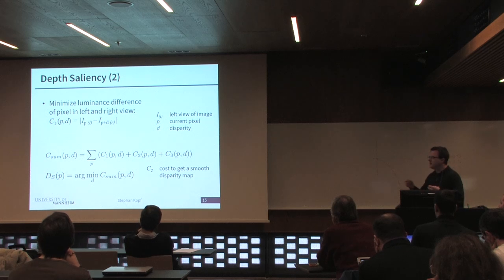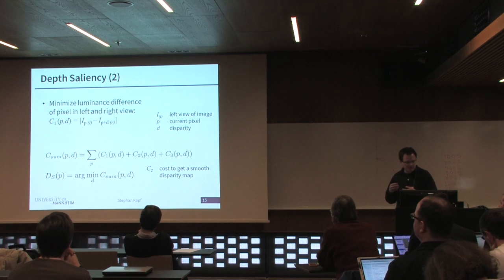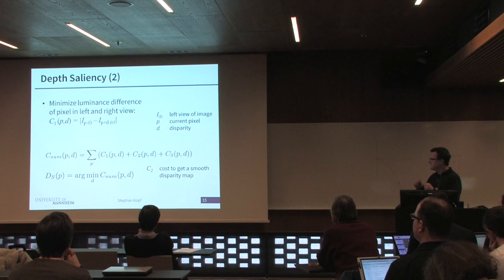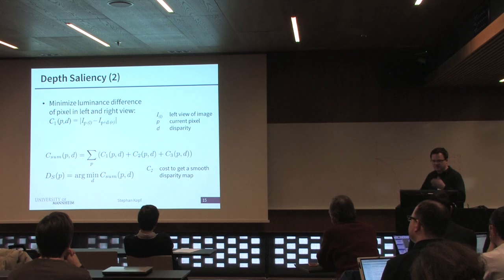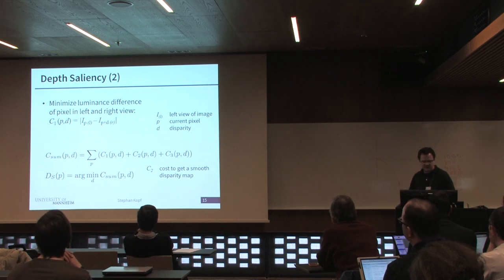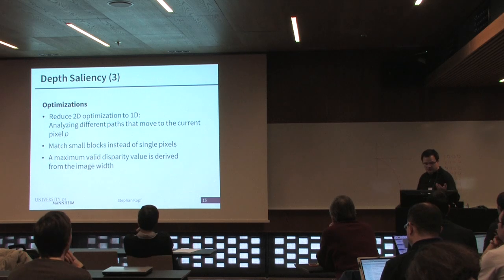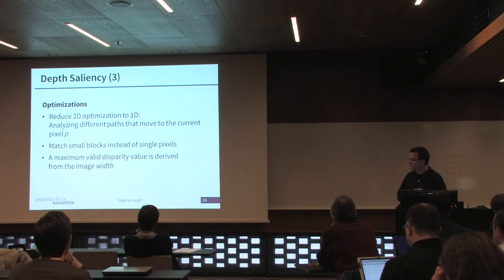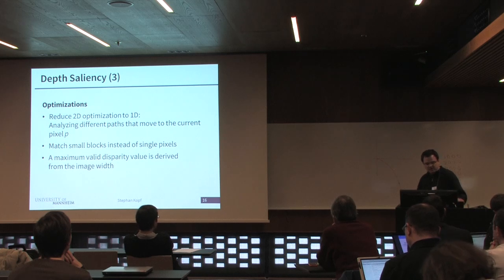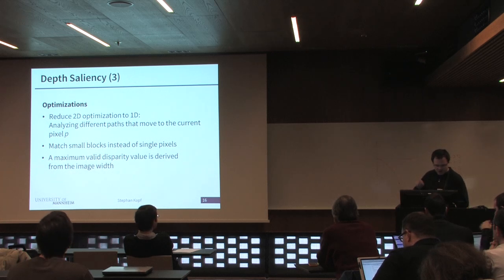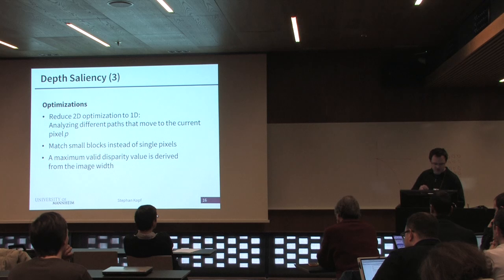The idea is to define costs. The main cost factor C1 defines the luminance differences for one pixel looking at another pixel in the second view by computing absolute differences. This gives very noisy results, so we need additional costs C2 and C3 to smooth out the disparity maps, and then find optimum disparity values for all pixels. The general problem is NP-complete, so we simplify by reducing from a 2D problem to a 1D problem by analyzing a path to the current pixel. We also compute disparity for small blocks rather than individual pixels, which improves performance. In addition, we check the input video resolution and estimate the maximum valid disparity used in the video.